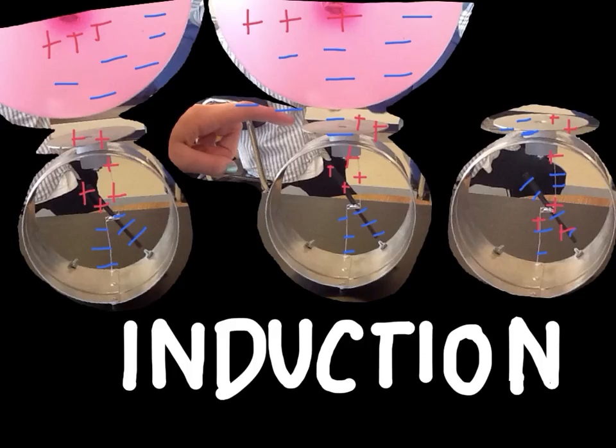So as Lauren explained, we charged the electroscope by induction. As you can see, by putting this negatively charged balloon near the electroscope, we pushed all of these negative charges to the bottom of the electroscope. Now when I touch my finger to the electroscope, it sees all of these positive ions over here...